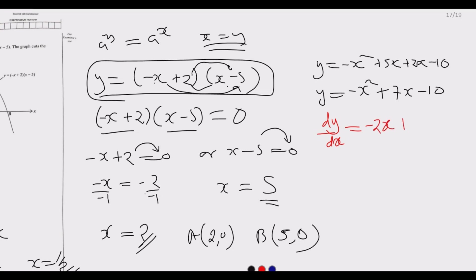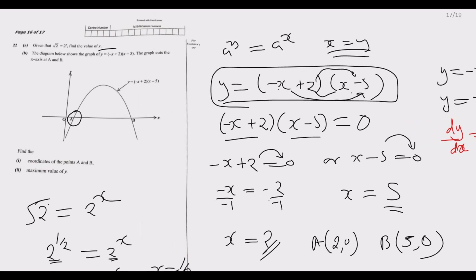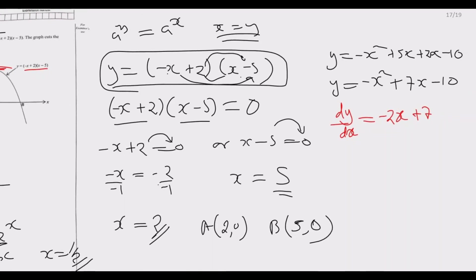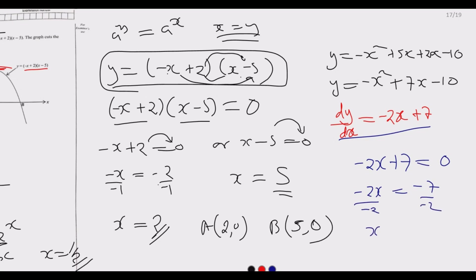We differentiate: dy/dx = −2x + 7. At the maximum point, the gradient is zero, so we set −2x + 7 = 0. This gives −2x = −7, so dividing by −2 we get x = 3.5. That is the value of x at the maximum.